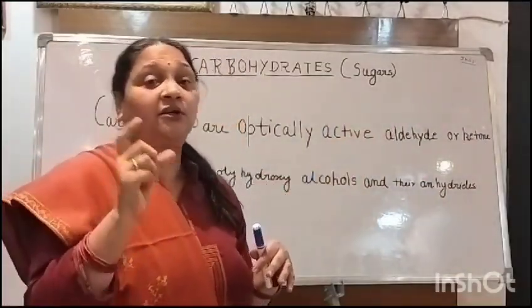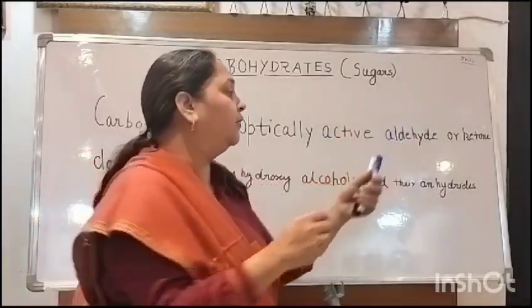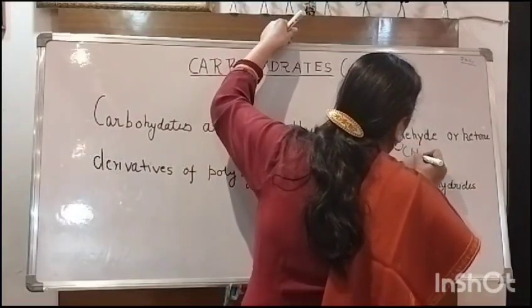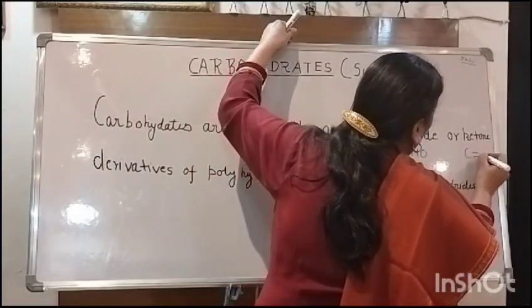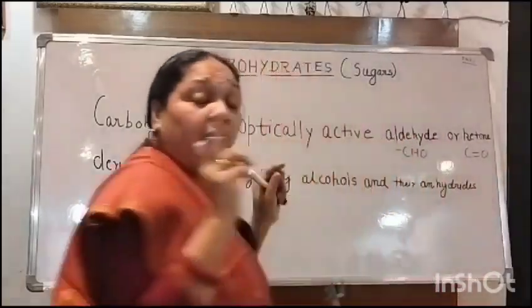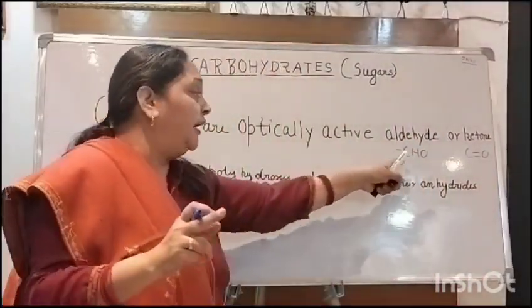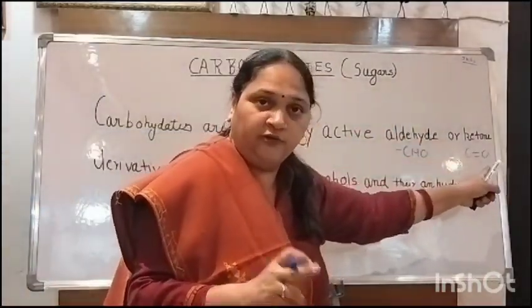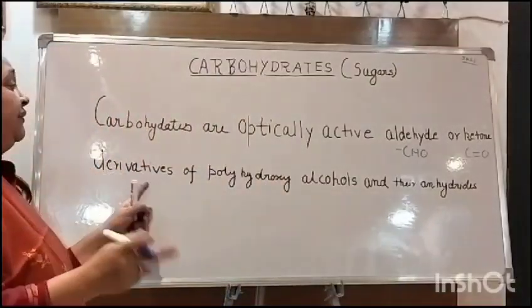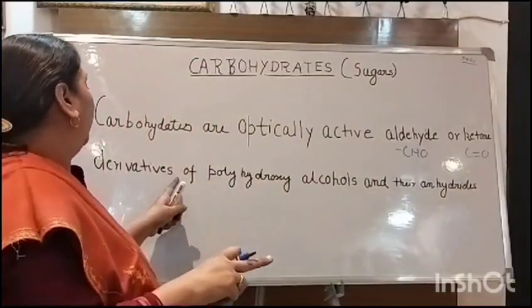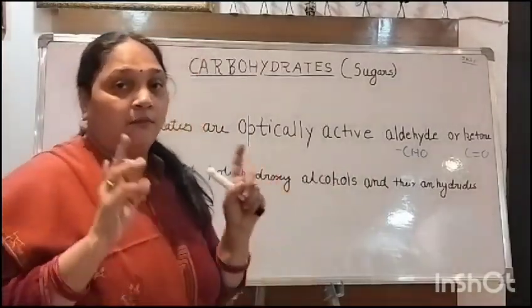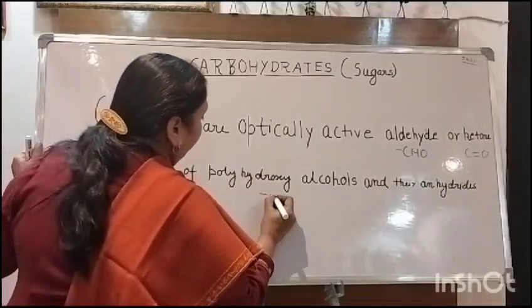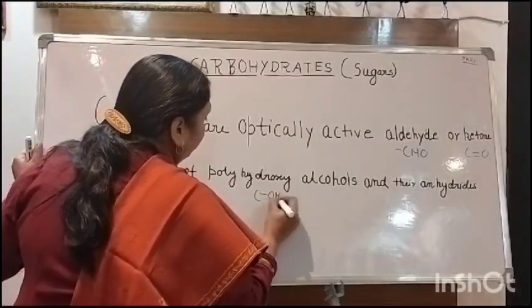Sugars have a functional group — either an aldehyde group (CHO) or a ketone group (C=O). So carbohydrates have either a CHO group or a ketone functional group. They are also unique derivatives of polyhydroxy alcohols, meaning they have many OH groups attached.